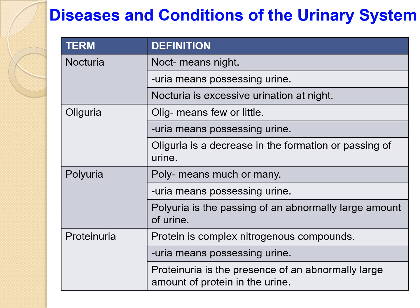Nocturia: 'noct' means night, 'urea' means possessing urine, so nocturia is excessive urination at night. Oliguria: 'oligo' means few or little, so oliguria is a decrease in the formation or passing of urine. In contrast, polyuria — 'poly' means many — is the passing of an abnormally large amount of urine.